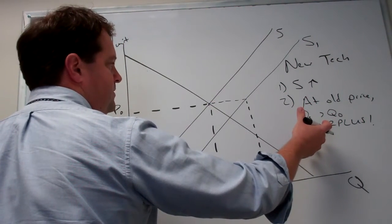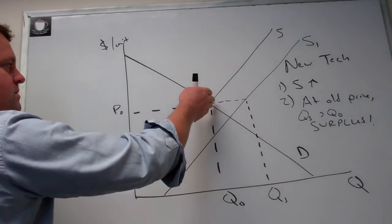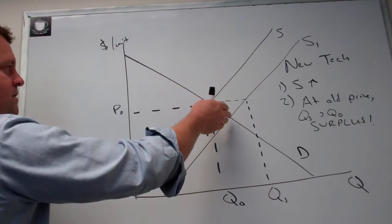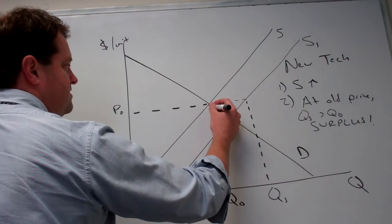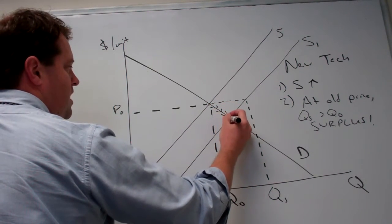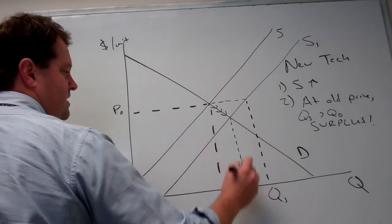Now we have a rationale as to what's going to happen to price. Price is going to have to be bid down to alleviate that surplus. So we're going to expect that suppliers are going to decrease the price for this good, and consumers are going to see that reduction in price and move along their demand curve and increase the quantity demanded of that good.